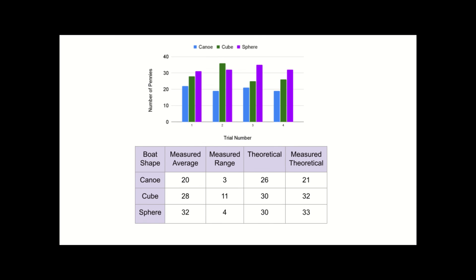I've added two columns to the table so the third one here is the theoretical values that we initially predicted and then the fourth column is the measured theoretical values that we recalculated after we had measured the boats. If we compare the predictions that we made with the measured volumes to the averages that we got from the plot we see that all the predictions are within the range of the averages.